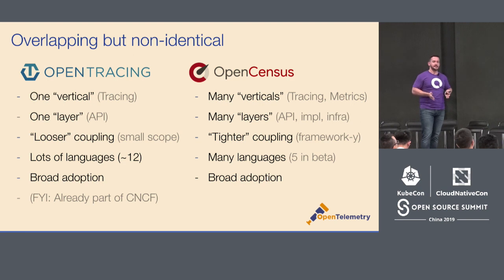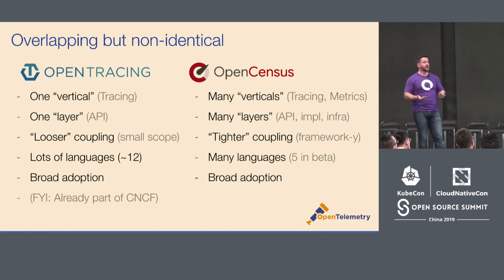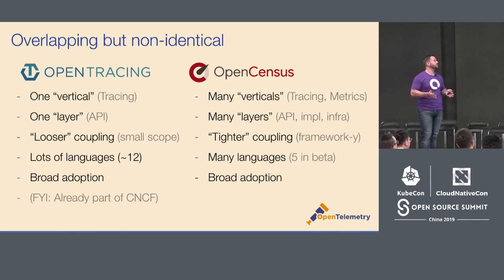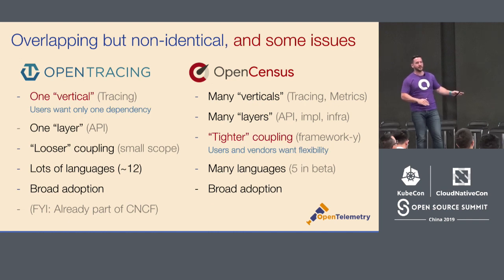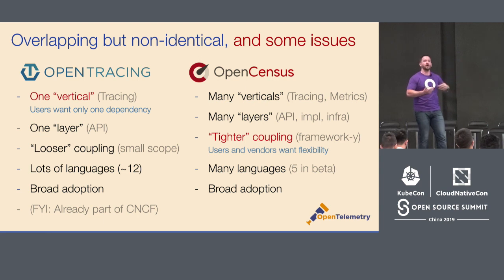On the other side, you have OpenCensus, which came out in early 2018. It attacked both traces and metrics, solving two different verticals. It addressed both the API and the implementation — the first solution to provide an end-to-end approach to this problem space. It was more tightly coupled in terms of frameworks and libraries it supported, did support a broad set of languages, and was broadly adopted. OpenTracing only addressed tracing, while OpenCensus was tightly coupled — vendors would prefer a more loosely coupled approach so they can differentiate on analytics.